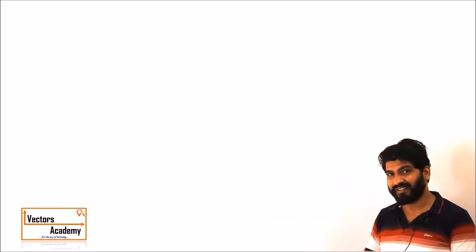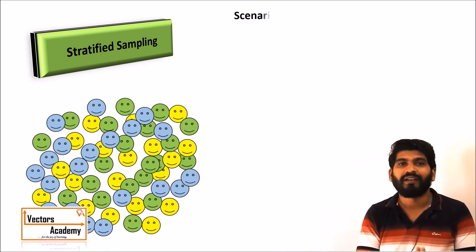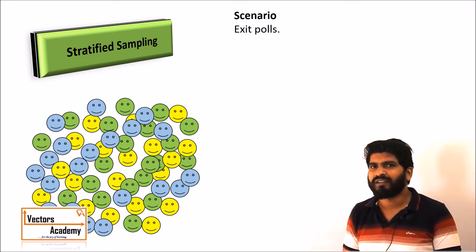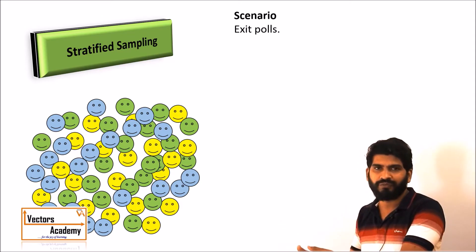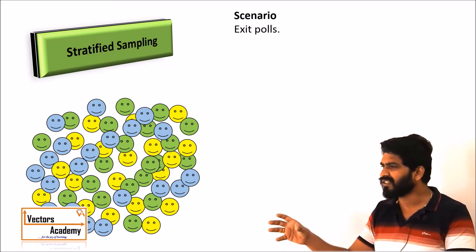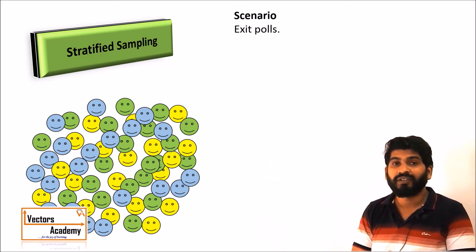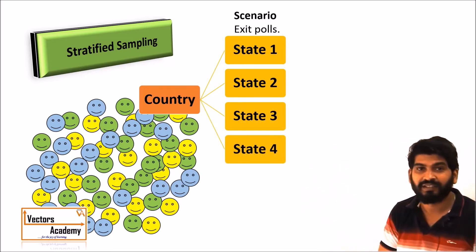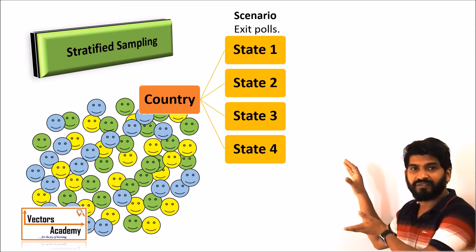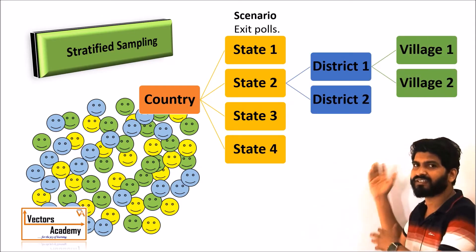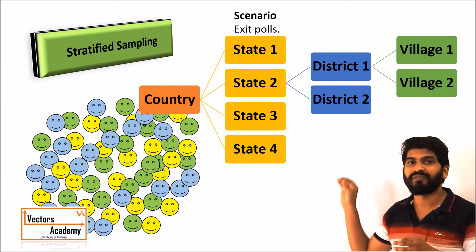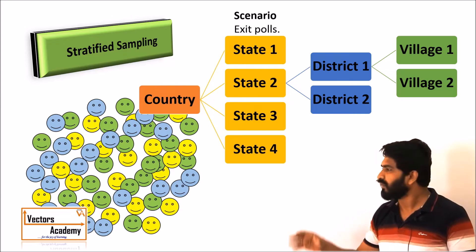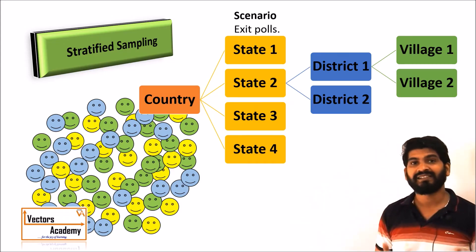The next method is stratified sampling. The best example is election exit polls. After elections, exit polls predict who will win. We cannot ask only people in one locality because that would give a biased opinion — a certain section of society tends to vote for a certain person. So the population is divided into different strata, meaning different hierarchies or levels. The whole country can be divided into states, states into districts, and districts into villages, from which we select samples to get accurate election predictions.